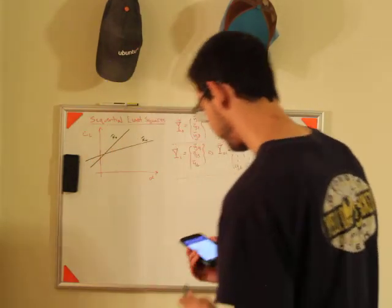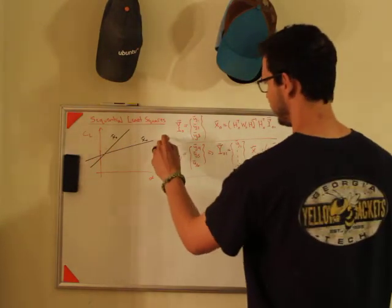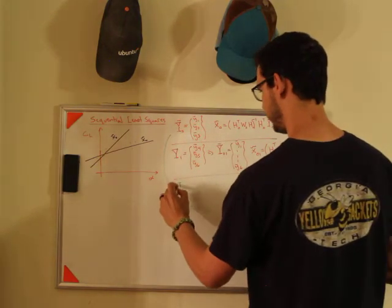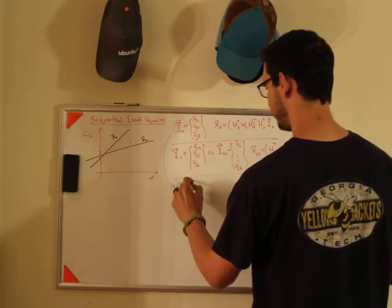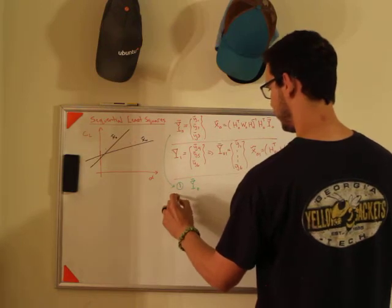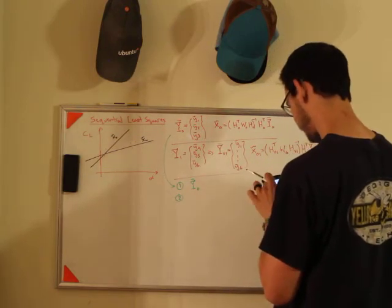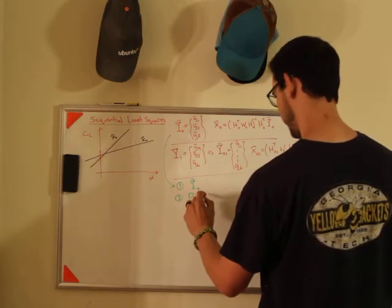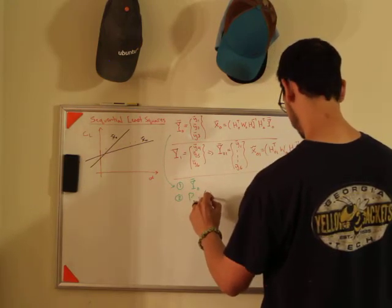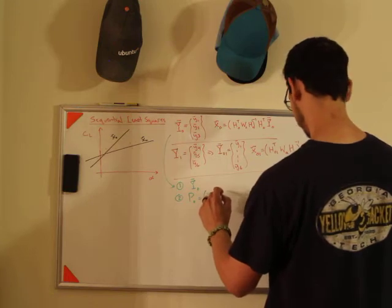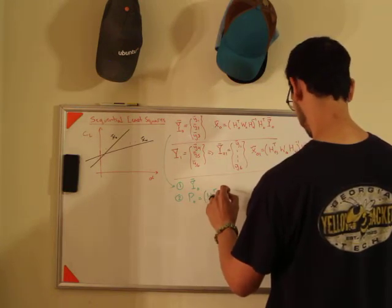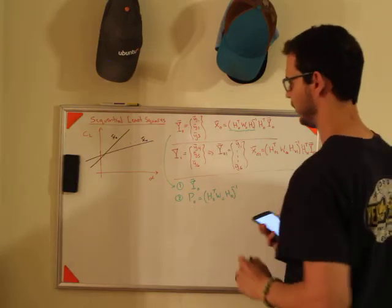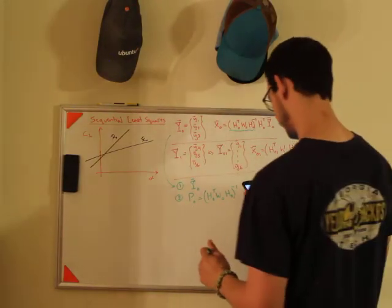The better way to do it is to come back to here and say, okay, step one, what I'm going to do is I'm going to get my initial y bar naught. Then what I'm going to do is I'm going to create a matrix called P, and I'm going to call that P naught, and that's going to be h zero, w zero, h transpose, h zero inverse, and if you notice, that's just the first part of this here. So I'm going to create P naught there,